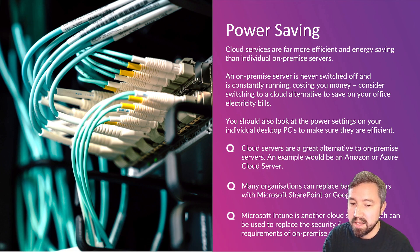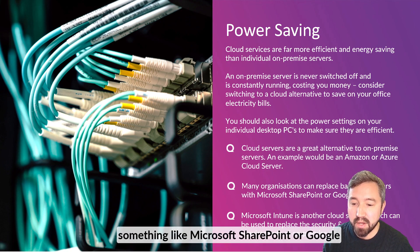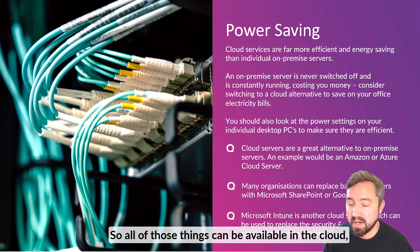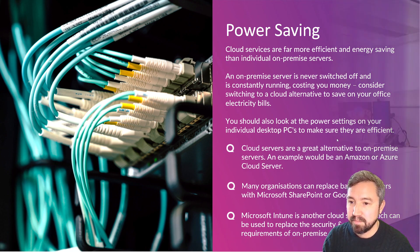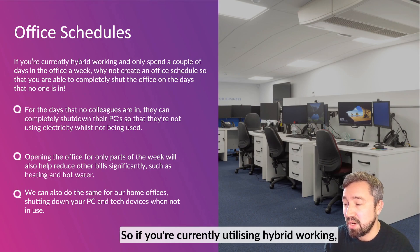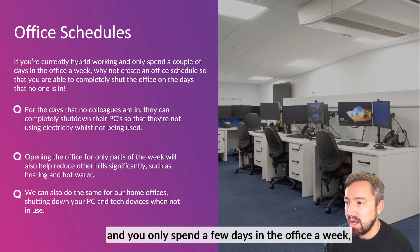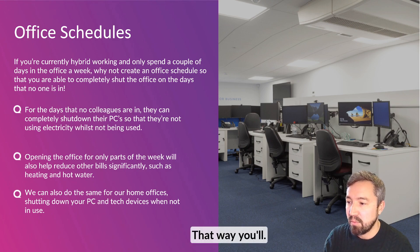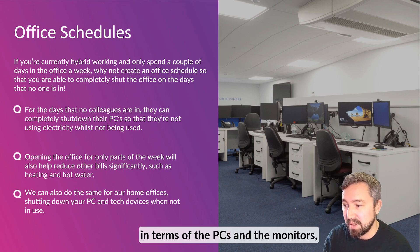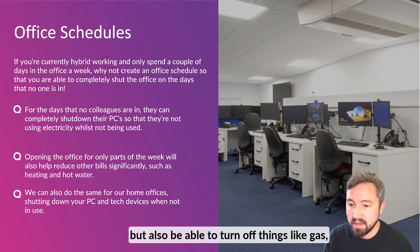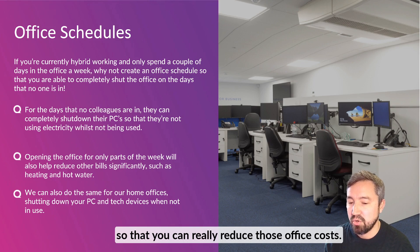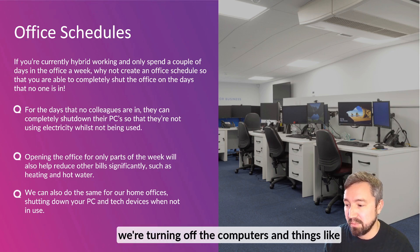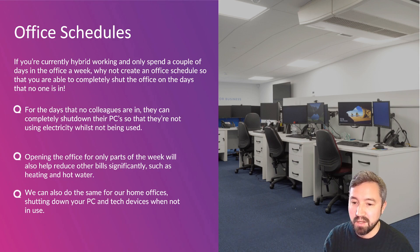Cloud servers are a great alternative to on-premise servers — Amazon or Azure servers are available. Something like Microsoft SharePoint or Google Workspace can completely replace the need for a file server at all, so all of those things can be available in the cloud, saving you money and saving you power. That takes us nicely to office schedules. If you're currently utilising hybrid working, and you only spend a few days in the office a week, try and create an office schedule so that you can close the office entirely for maybe one or two days per week. That way, you'll have no one in the office saving money on electricity from PCs and monitors, but also be able to turn off gas, electricity, heating, and hot water. And that goes vice versa for home offices — make sure that when we're working at home and we leave, we're turning off computers, having days when you're not there at all so you can turn the heating off.